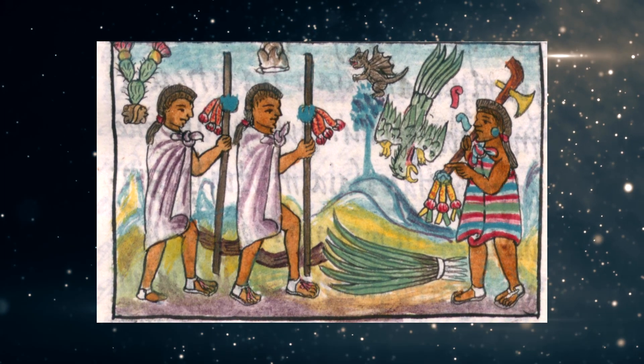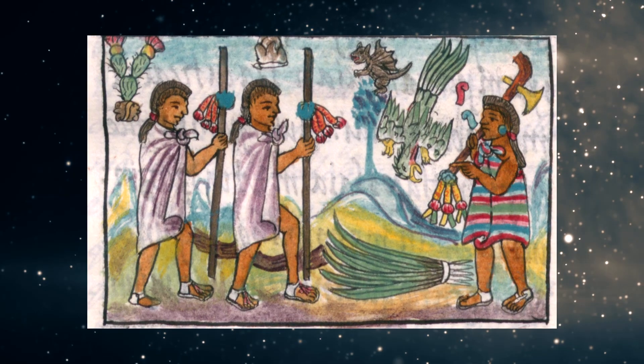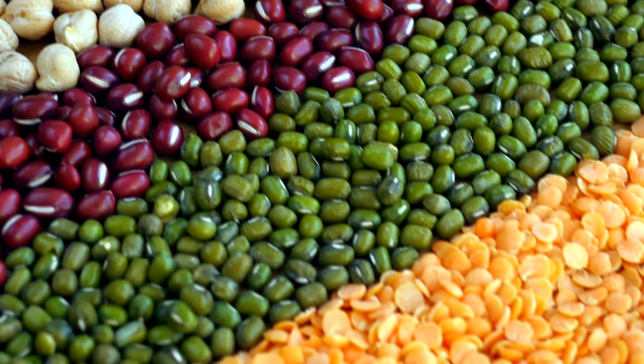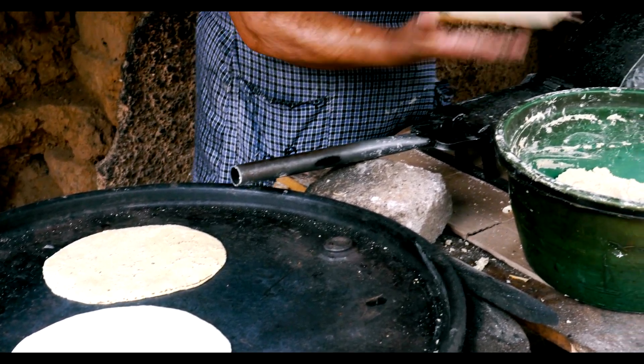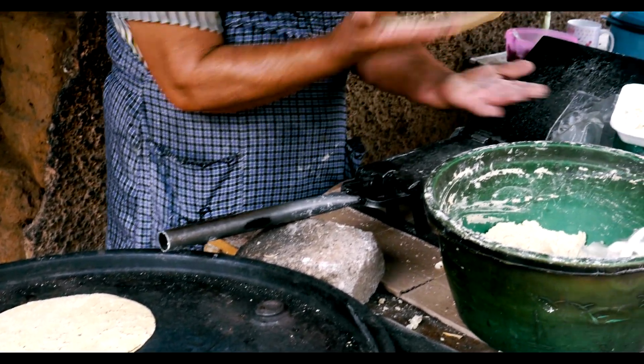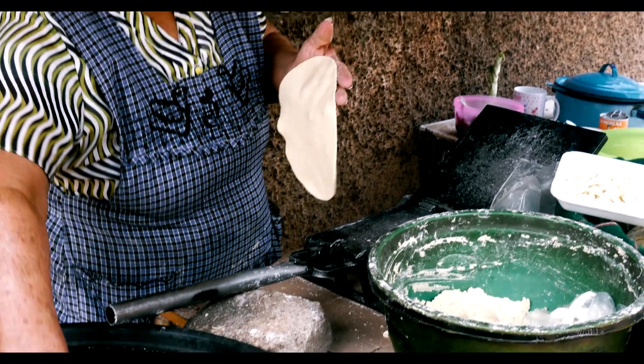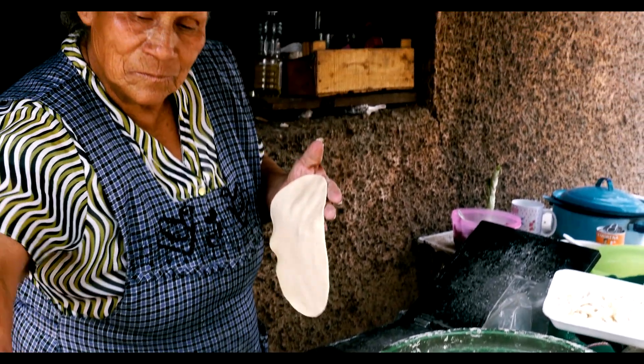Runners and couriers in their capital Tenochtitlán were using spirulina cakes as a form of nutrition, together with beans, tortillas, and mole, for long-distance travel. When the Spanish arrived in modern-day Mexico, to them this type of blue-green algae mostly looked odd.